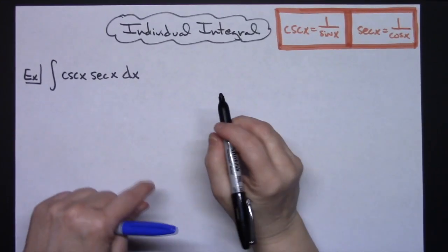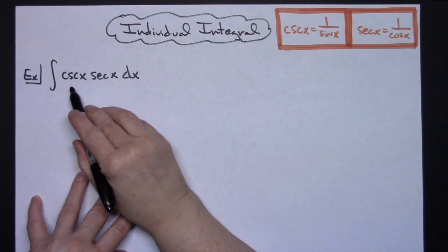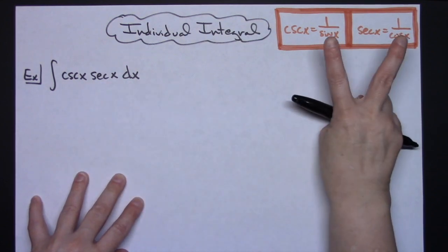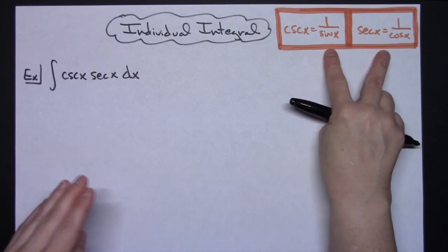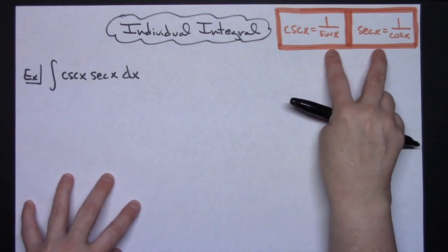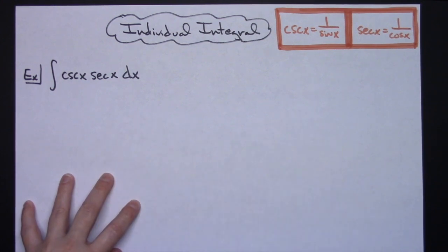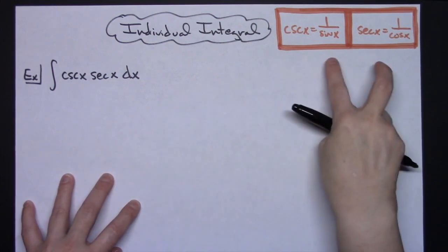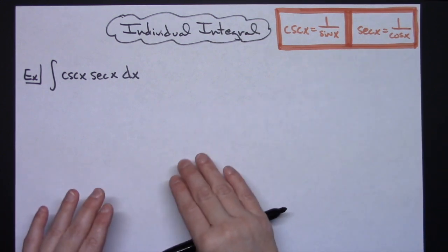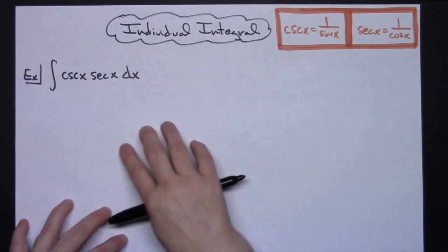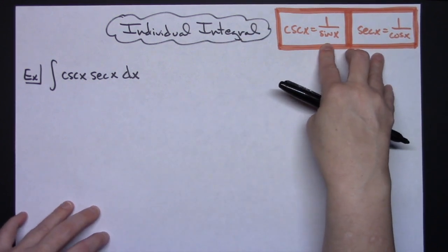In this video I'm going to be working out an individual integral. We're going to take a look at the integral of cosecant x secant x dx. I have two reciprocal trig identities written up here because those are the first two we're going to start with. Anytime you're working with trig functions inside integrals it's really helpful to know all of your trig identities, Pythagorean identities, and double angle formulas.